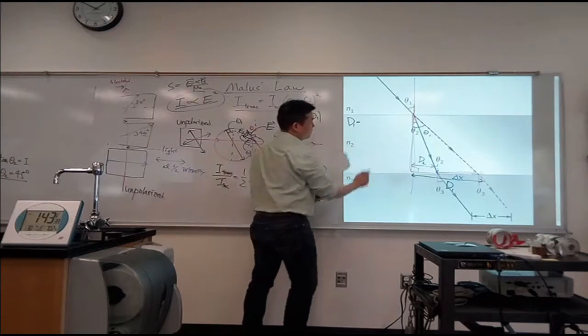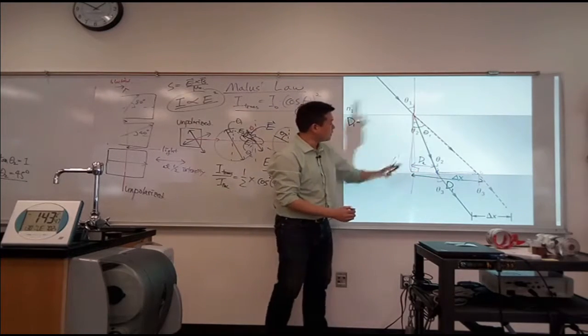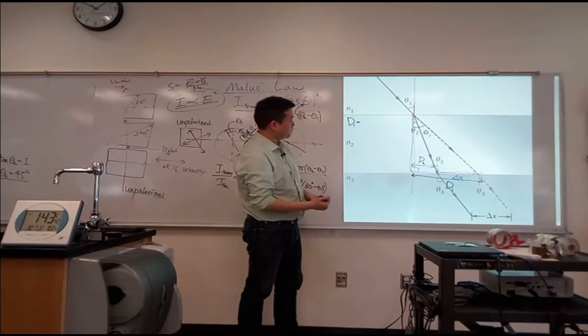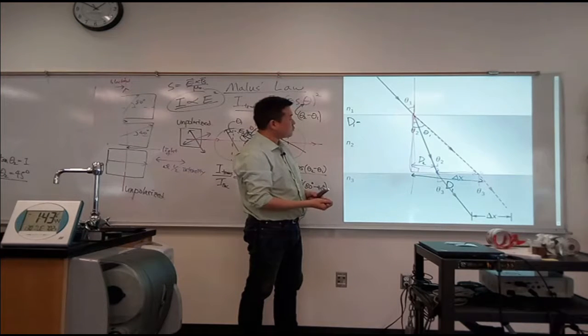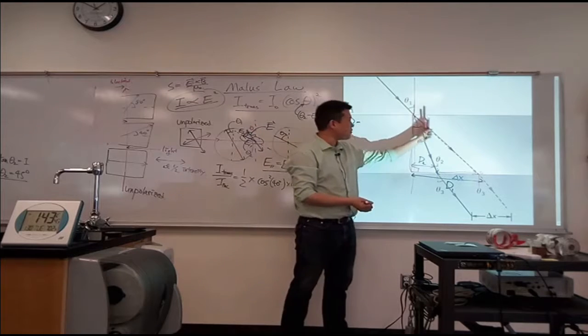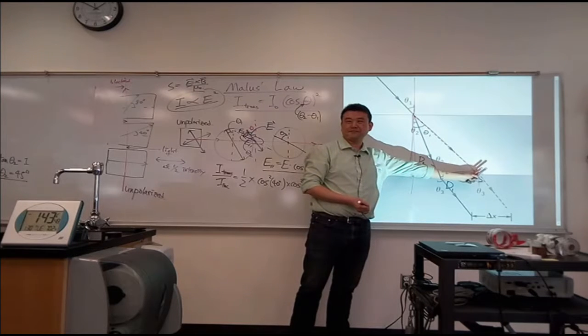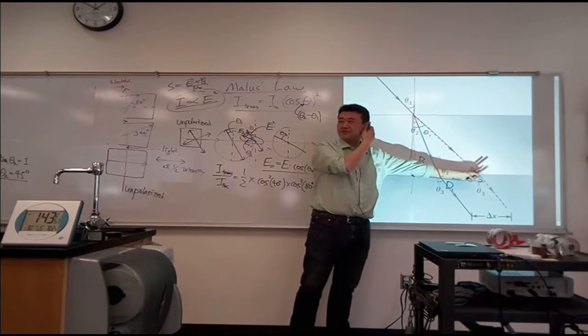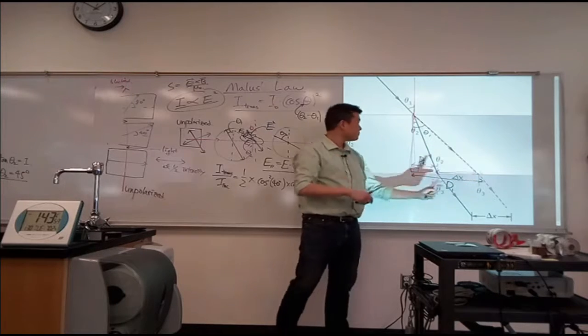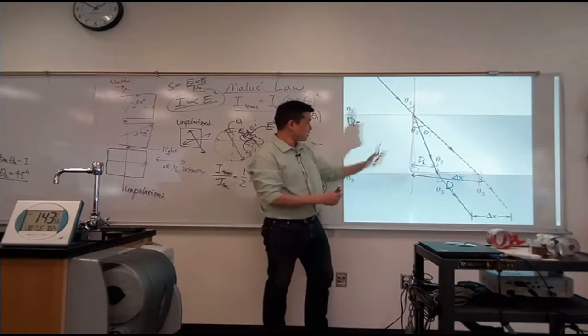D one is going to be, that's the opposite side of that angle. And I guess you have to make a choice what you know. Do you know the hypotenuse of this triangle here? No, what do you know? Yeah, you know the thickness.